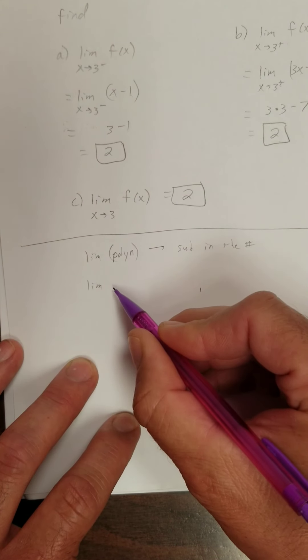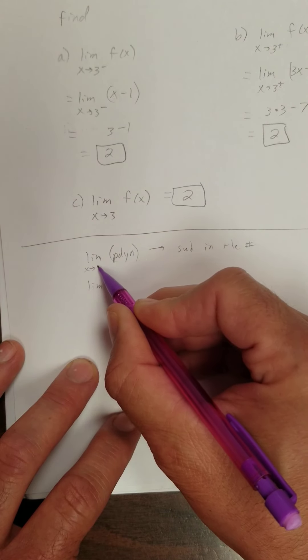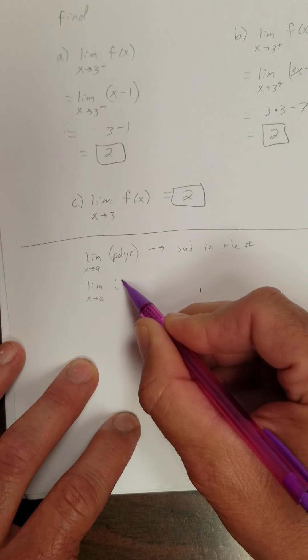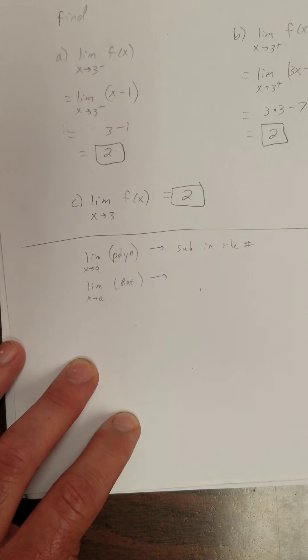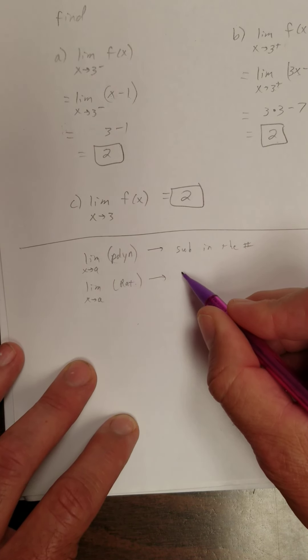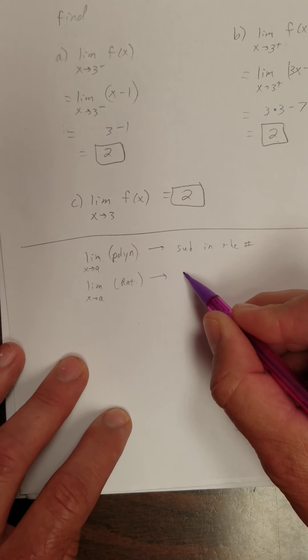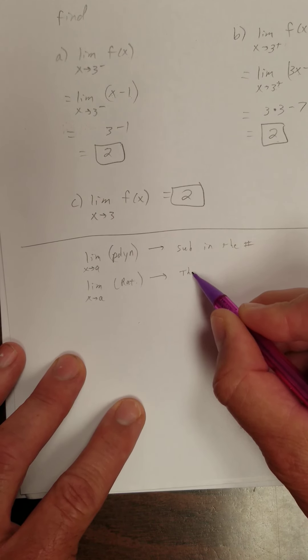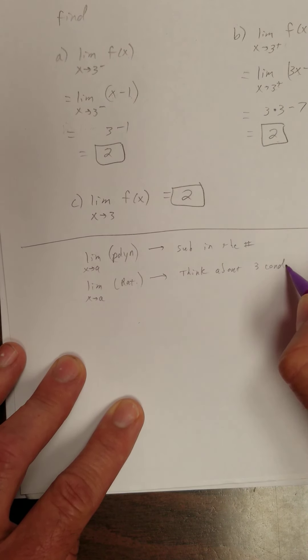What about the limit as x approaches some number, I guess I should put as x approaches a, of a rational function? What do I do? I look at the 3 conditions ahead that I'm supposed to memorize, right? And go about it that way. Think about 3 conditions. Remember we said one of them, the denominator is equal to 0 but the numerator is not, and so forth.